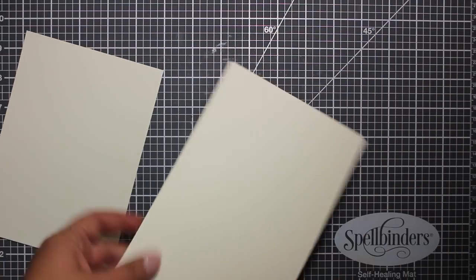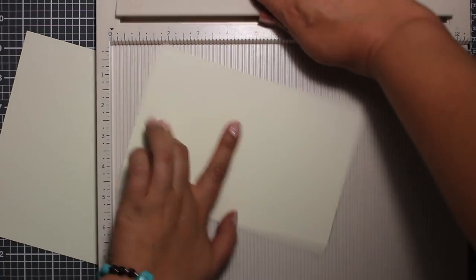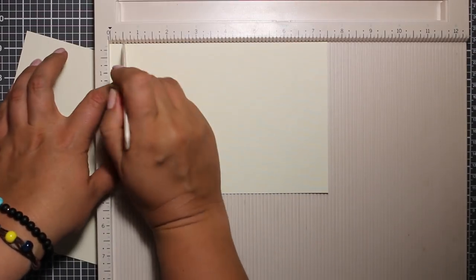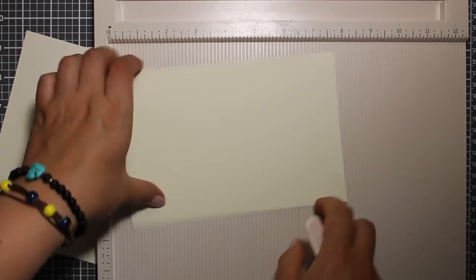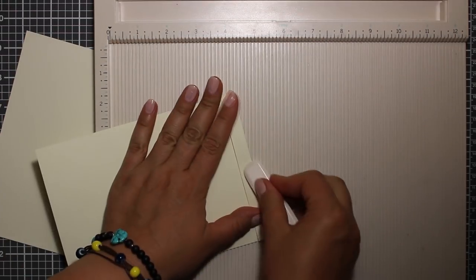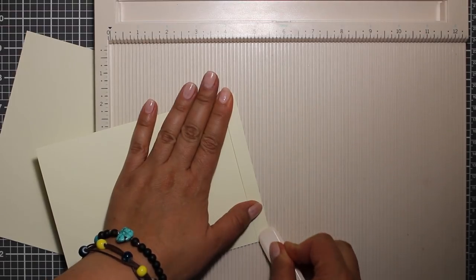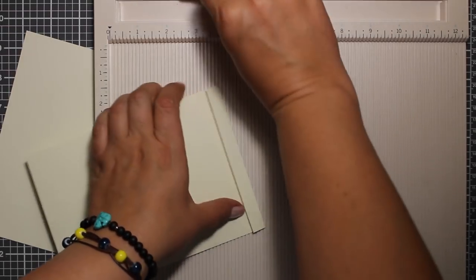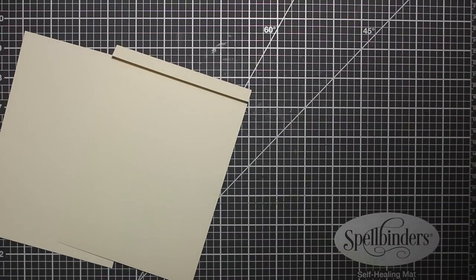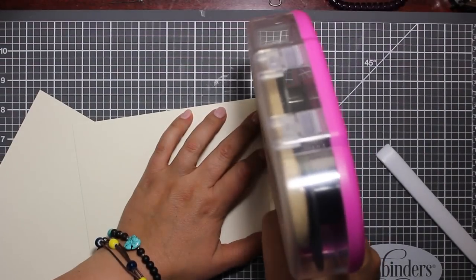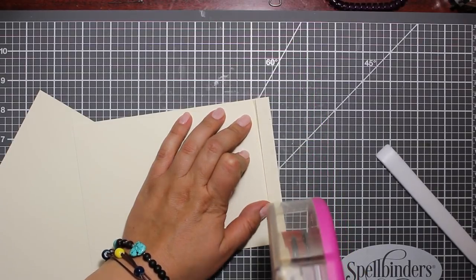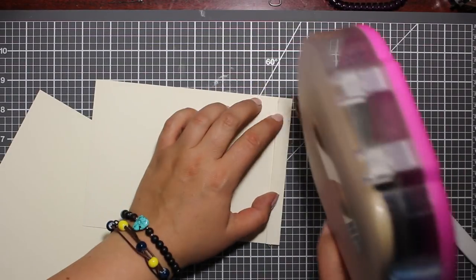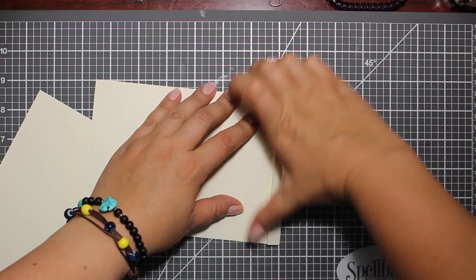So I want to make a top folding 5 by 7 card base. But the piece of cardstock that I'm using is not large enough, so I'm going to create a hinge. Here I have two pieces of cardstock and one of them is slightly larger than 5 by 7. It's about half an inch longer. So I'm scoring it at the half inch mark, applying some adhesive, and then I'm sticking both pieces together to create one entire card base.